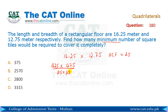The area calculation: 25 into 25 gives 3315 tiles. So the minimum number of tiles required is three thousand three hundred and fifteen, because we are using the maximum possible tile size.